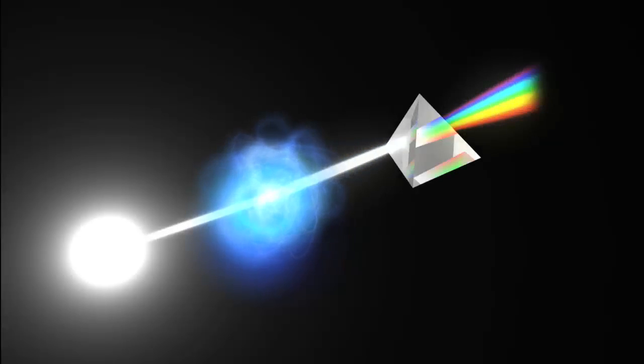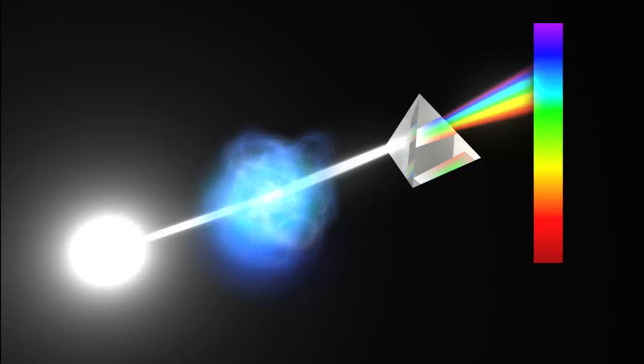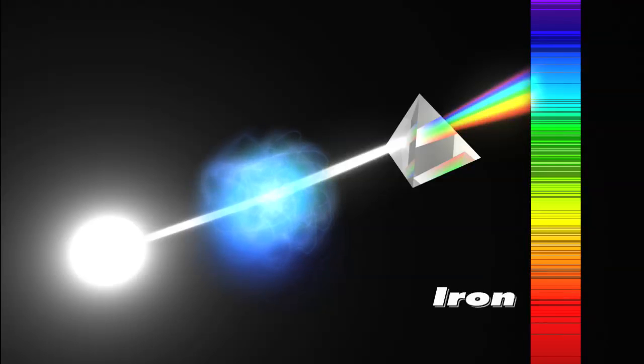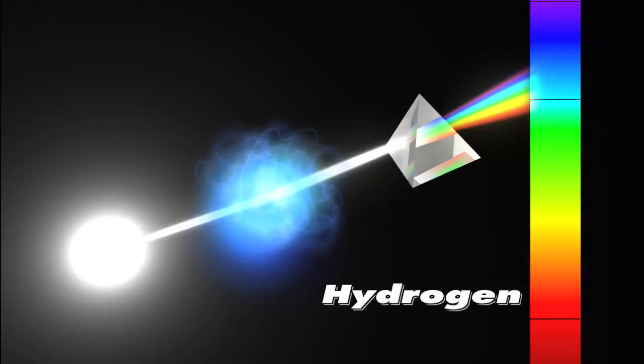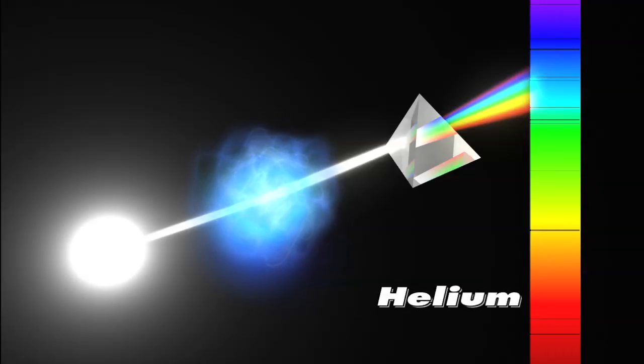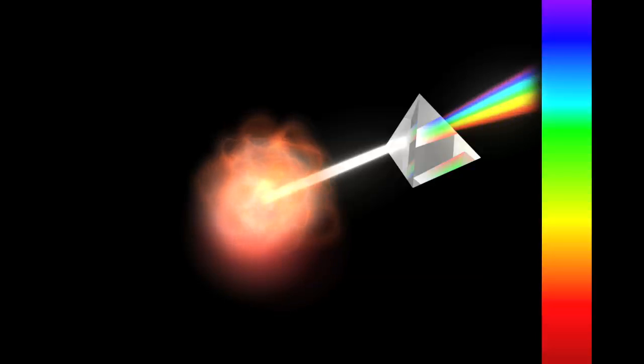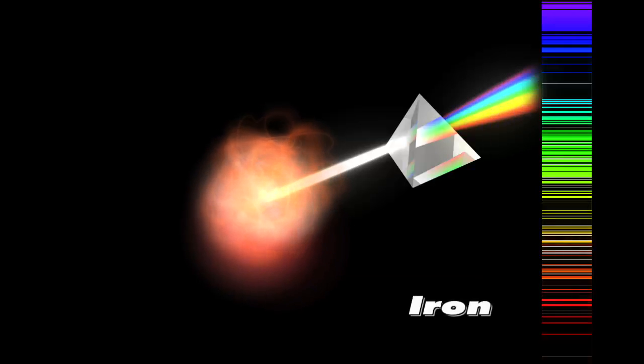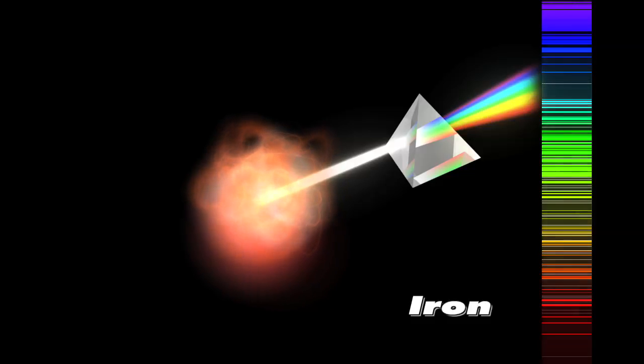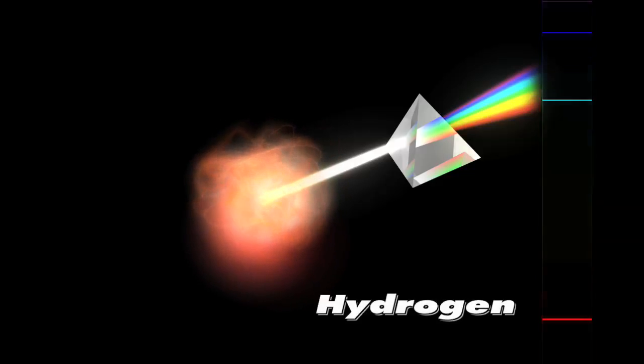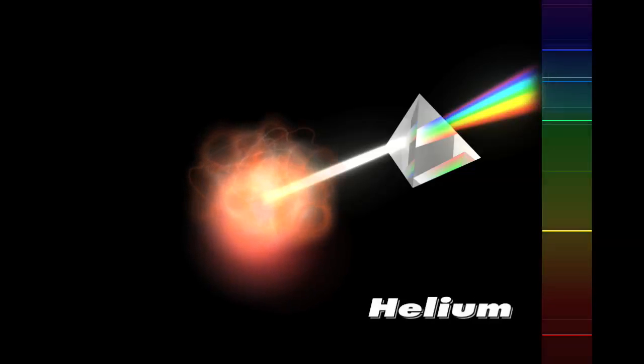If a cooler gas lies between us and a hotter source of radiation, the atoms and molecules will absorb certain photons. This produces an absorption spectrum, where gaps appear at specific wavelengths depending on which atoms and molecules are present in the gas. An emission spectrum occurs when atoms and molecules in a hot gas emit a photon with a specific energy or wavelength. The bright lines are again unique signatures of each atom and molecule.